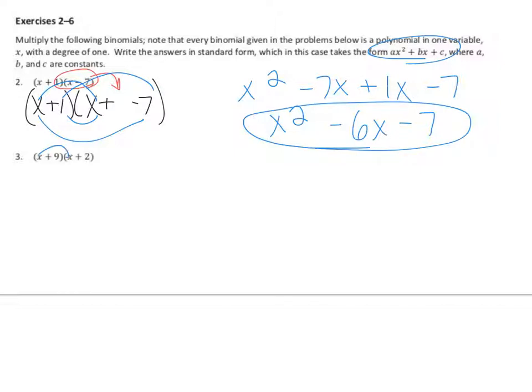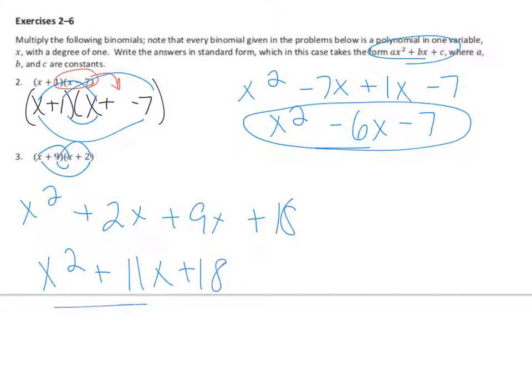Here it's a little bit easier. First is x squared, outer is 9x, inner is 2x, and last is 18. Collect those middle terms. 9 plus 2 is 11, so x squared plus 11x plus 18. And we have our answer.